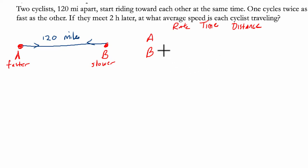So maybe I can solve this by tying these things together or just listing out what I know about them. Let's say the slower cyclist has some rate R. Well, what would the rate of the faster cyclist be? It would be double that. How do I know it's double? It says it right here. It's twice as fast as the other.